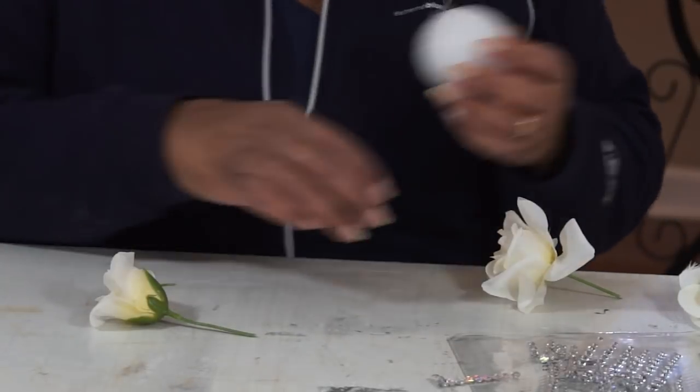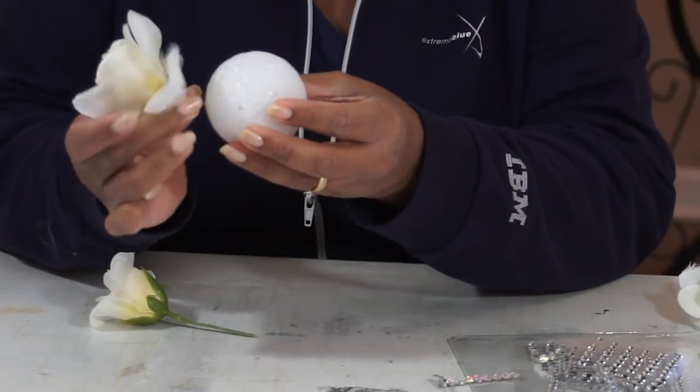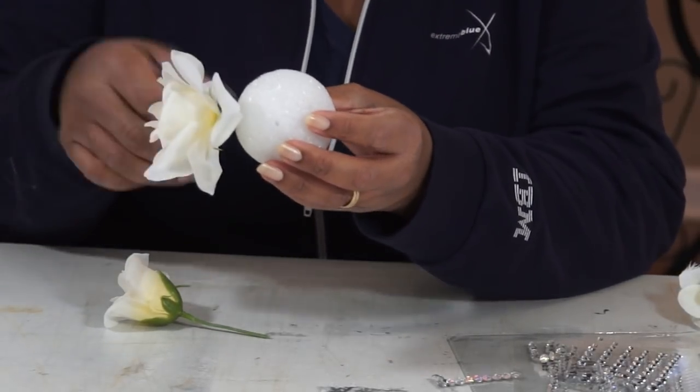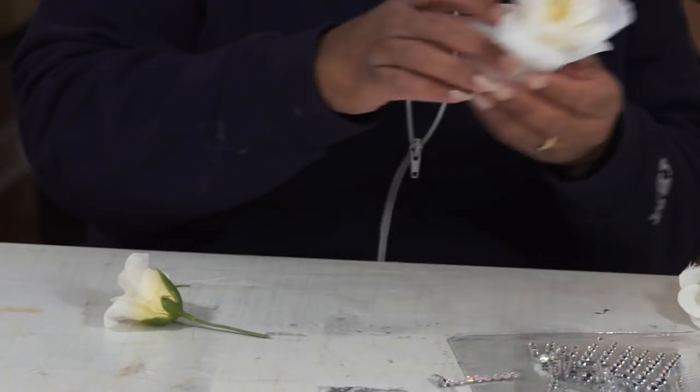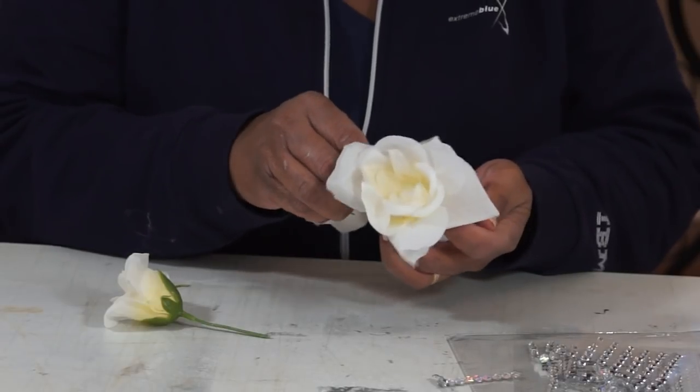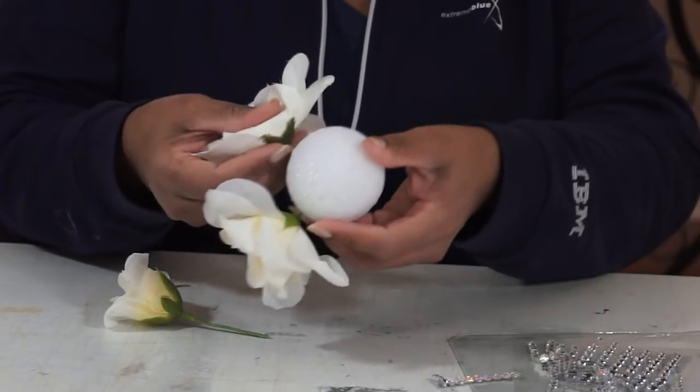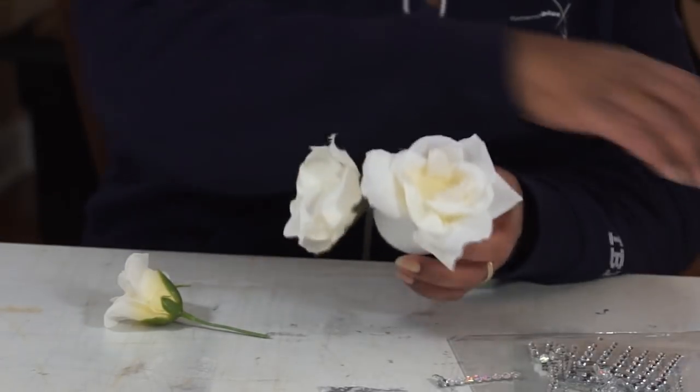And so what I'm gonna do now is I'm just gonna take this little ball here, I'm just gonna start inserting them on the side like this, and what this is gonna do is create like a little shelf that sits on the top of the vase. So you just want to go around the sides towards the bottom of this little styrofoam ball.